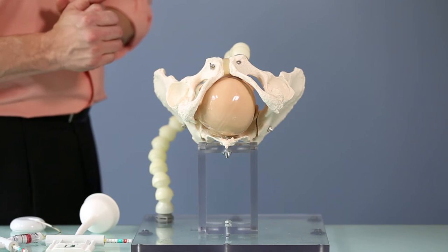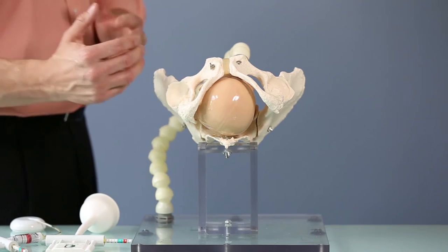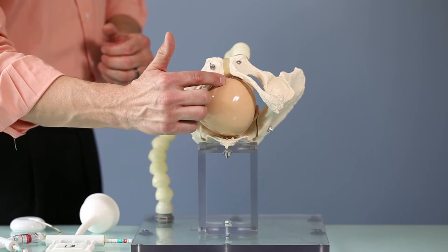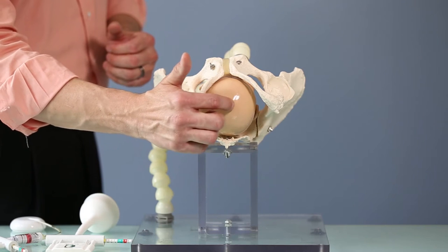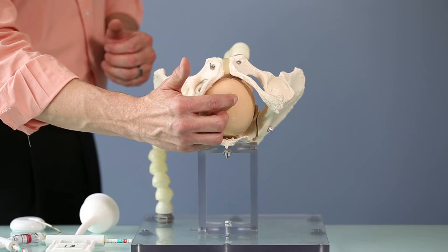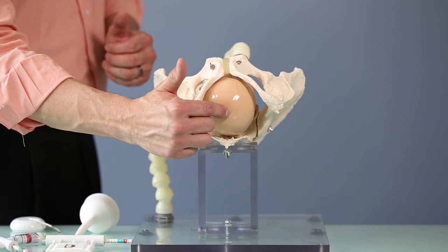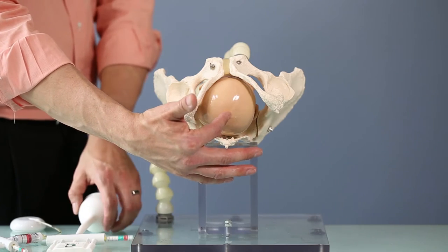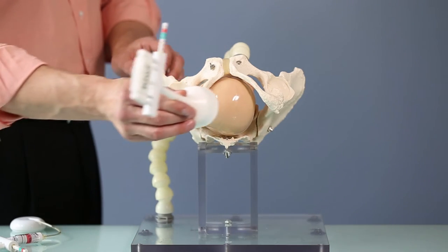Now this is still a delivery I'd let my intern do, but notice what it's done to the presenting part and flexion point. The presenting part has become mainly the right parietal bone and the flexion point has moved down three centimeters along the sagittal suture away from where we can access it using a rigid stemmed cup.